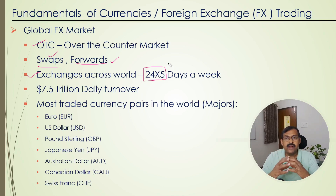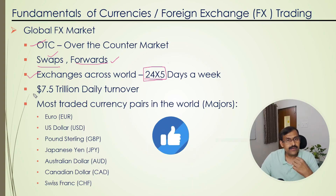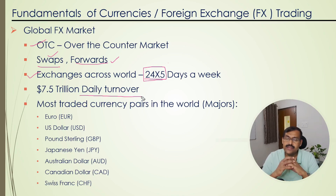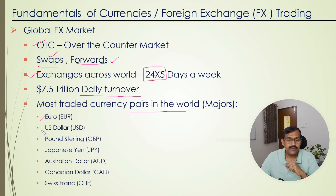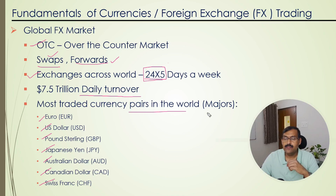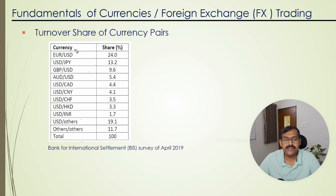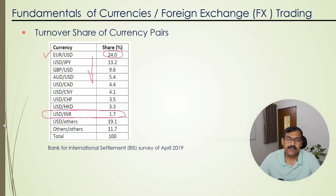Currencies are active and their values keep changing based on what is happening across the world. It is estimated that there is a $7.5 trillion daily turnover in the Forex market — quite huge. The most traded currency pairs in the world are Euro, USD, Pound, Japanese yen, Australian dollar, Canadian dollar, and Swiss franc. These are also called the majors. Looking at the turnover share of different currency pairs, the highest is EUR/USD, contributing 24% of turnover, followed by USD/JPY, and so on. USD/INR contributes 1.7% of the FX daily turnover share, based on the Bank for International Settlements survey.